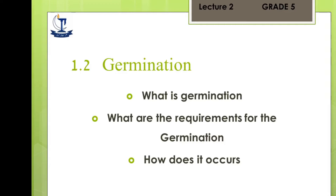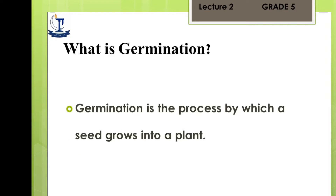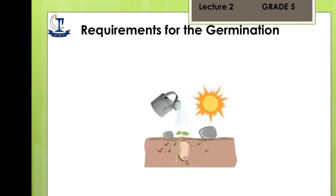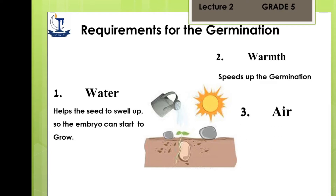Germination is the process by which a seed starts to grow. For the growth of the seed, there are three factors which are very important for germination. The first one is water — it helps the seed to swell up so the embryo can start to grow. The second factor is warmth — it speeds up the germination. The third factor is air — it releases energy for the embryo to germinate.